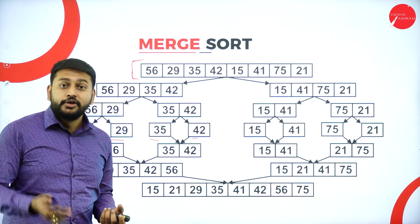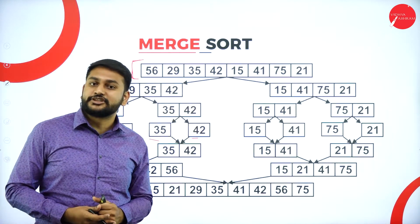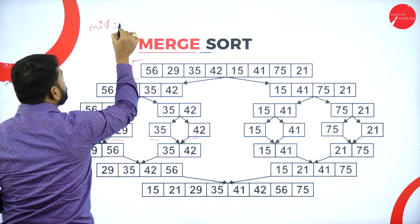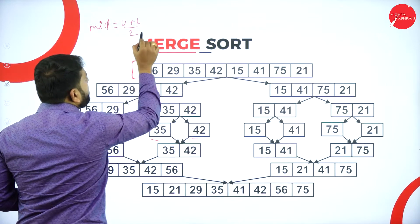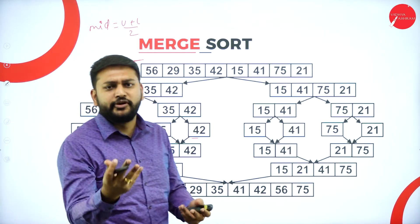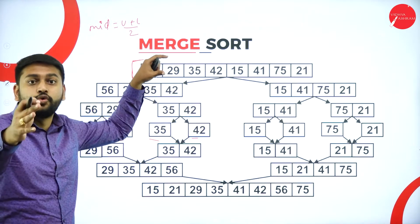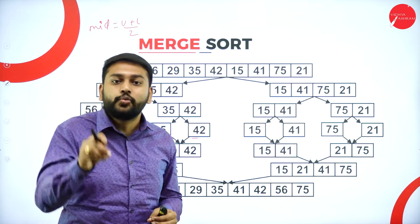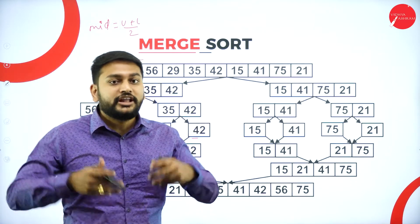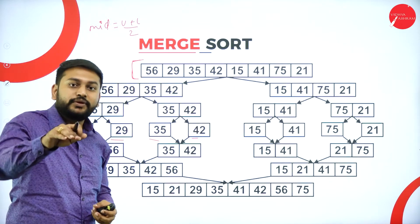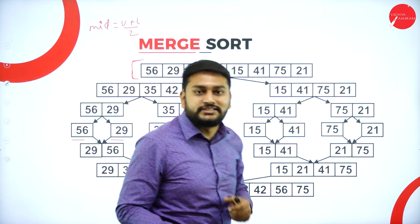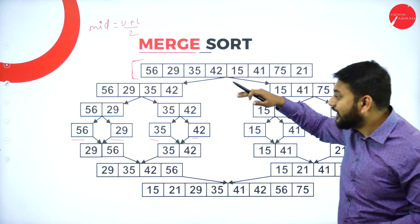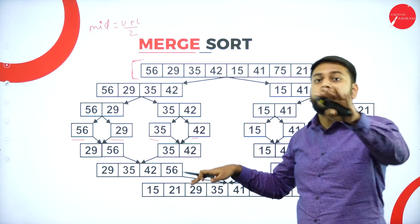How do we calculate the mid value? Remember we had a concept called binary search? In binary search we used the formula: mid is equal to upper bound plus lower bound divided by 2. You can also use lower bound plus upper bound divided by 2. This gives the mid value. I will calculate the mid value in each and every step recursively — meaning the same function calls itself again and again — until I get the values individually.